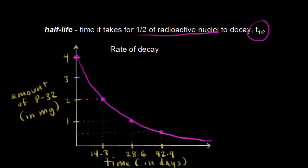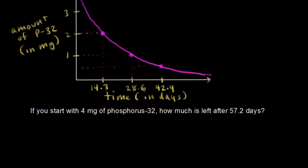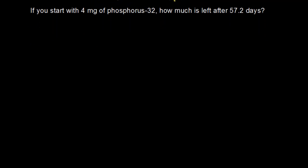Let's do a very simple problem here. If you start with four milligrams of phosphorus-32, how much is left after 57.2 days?